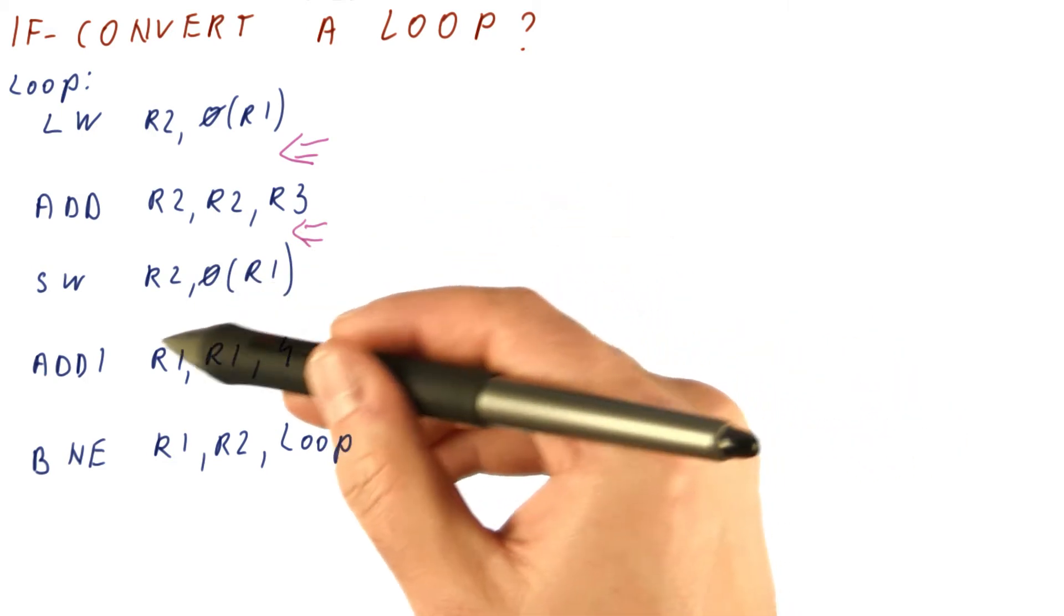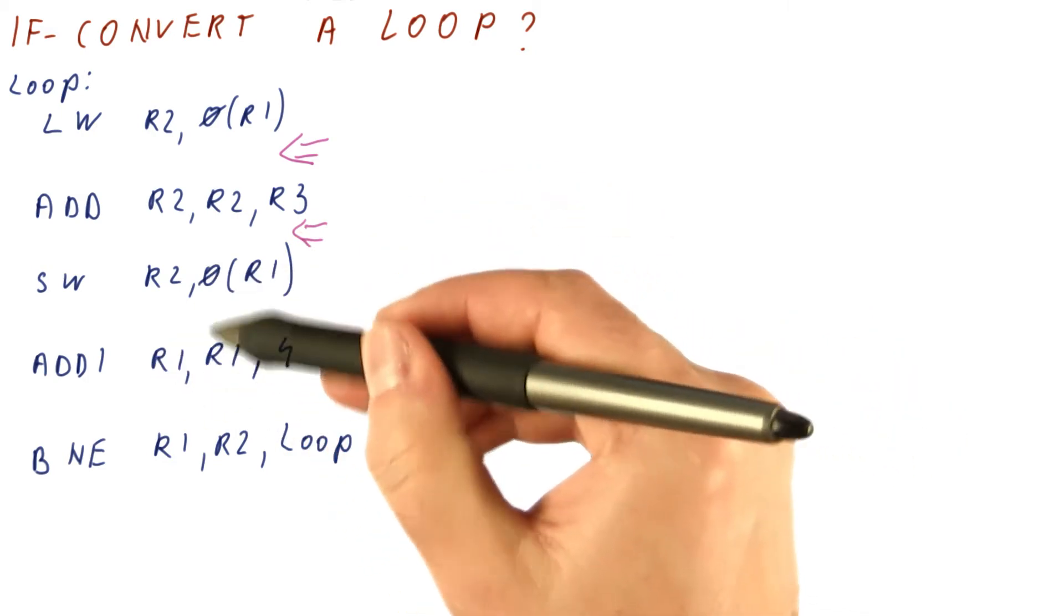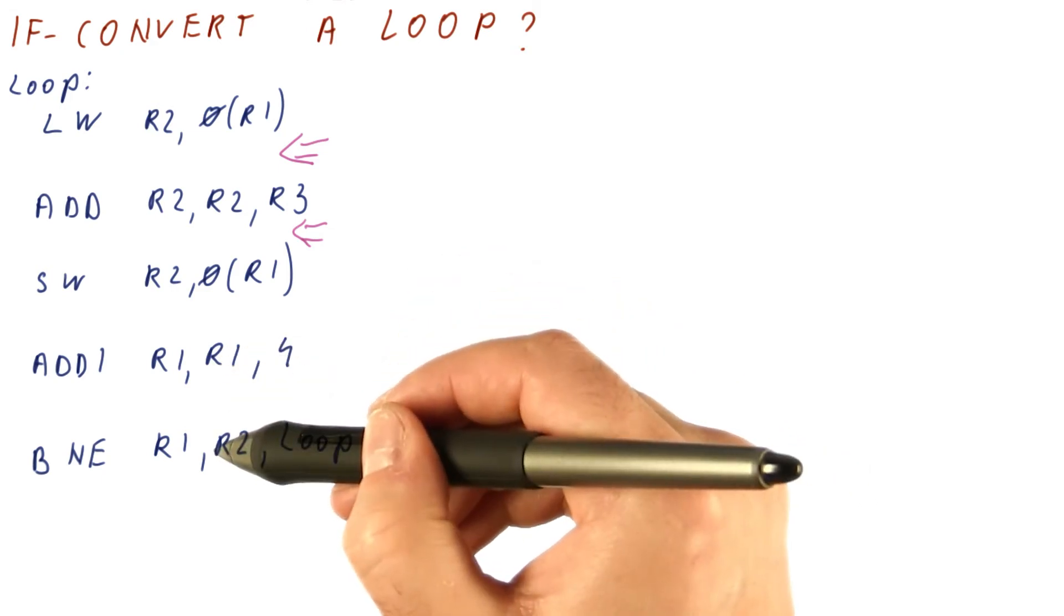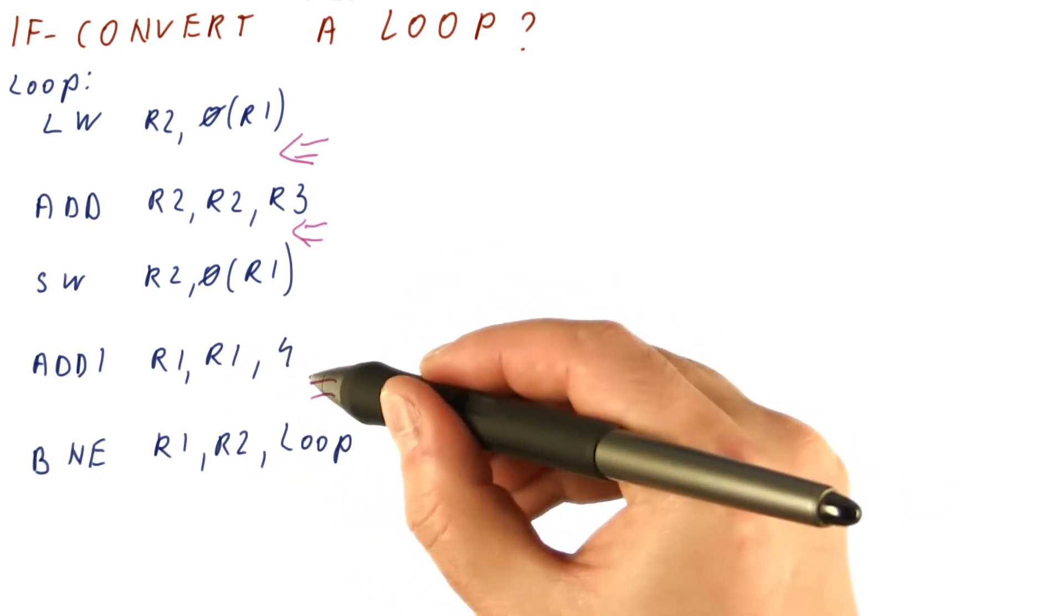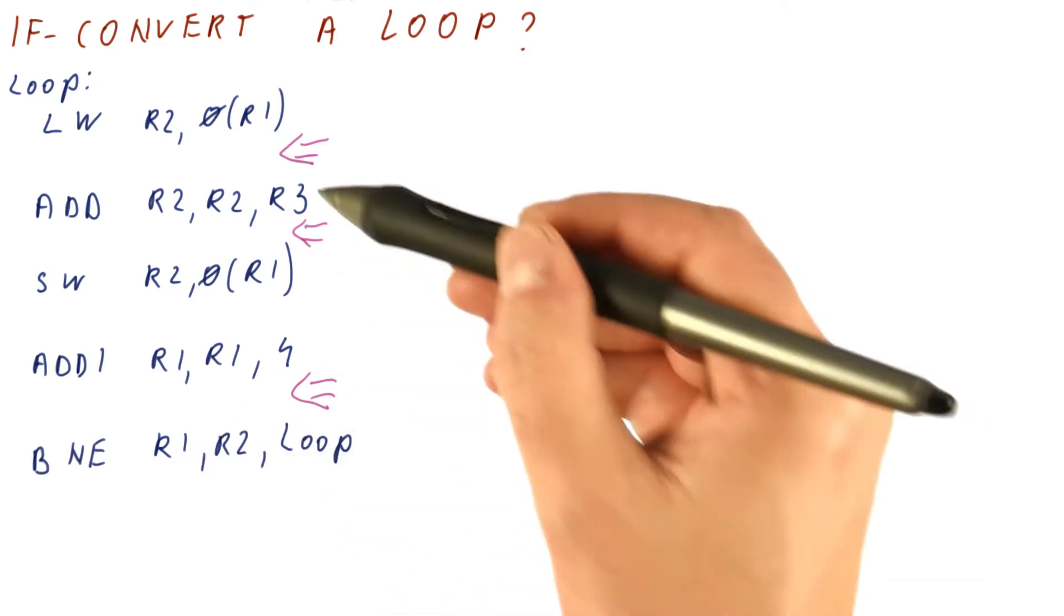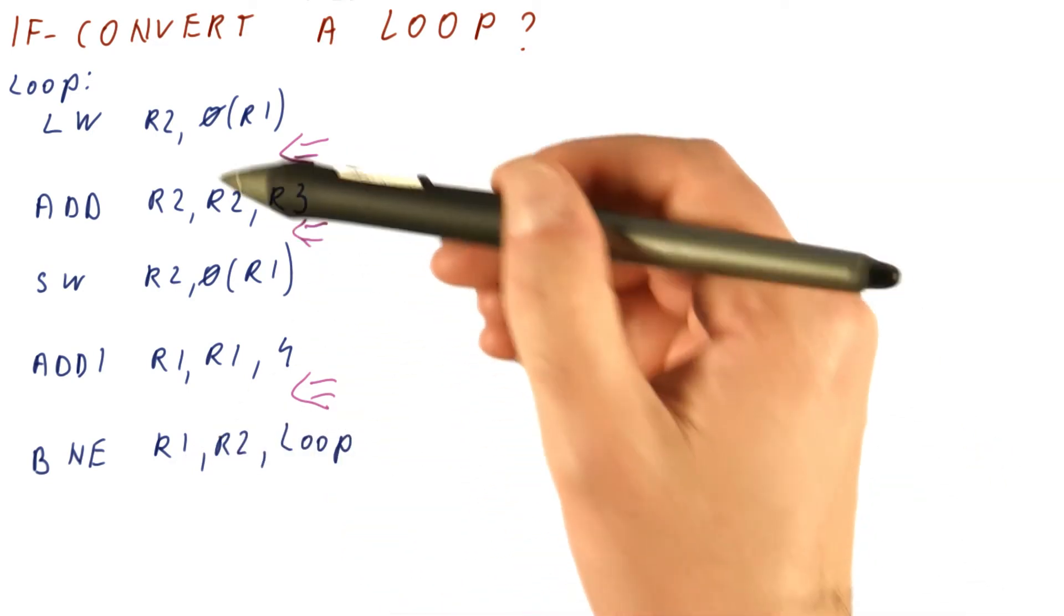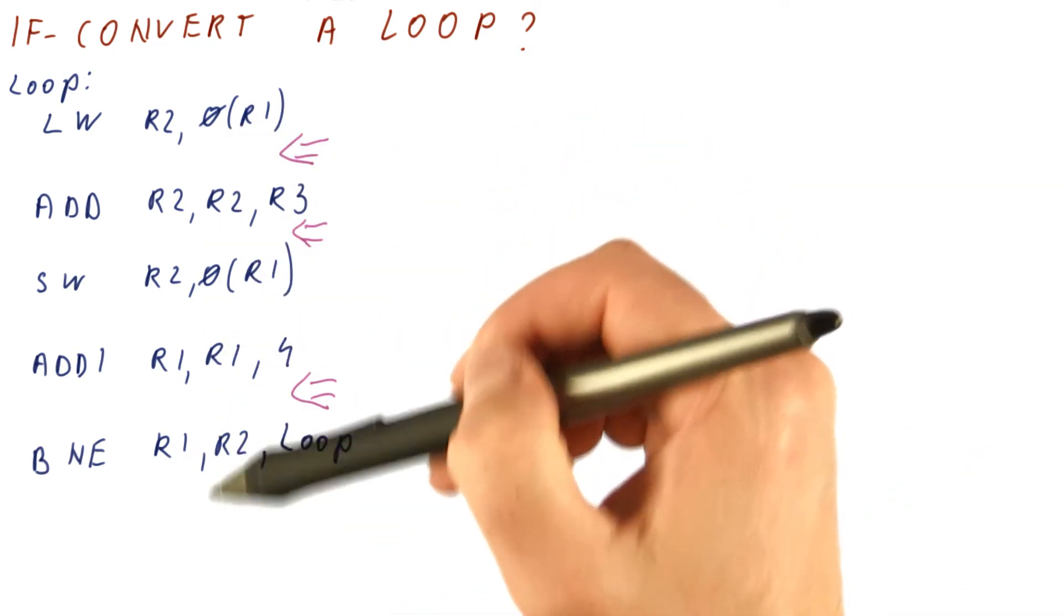There is no stall cycle here because this add can actually proceed immediately, doesn't depend on the store. And then the branch gets delayed by one more cycle because it's using the result of the add. So we have three stall cycles here, and again, this is a processor where every operation just takes two cycles.